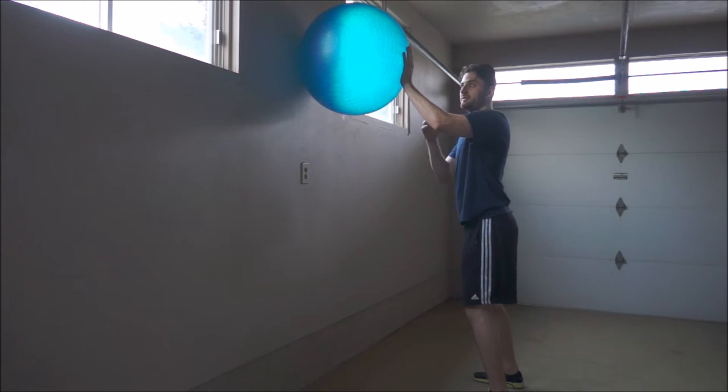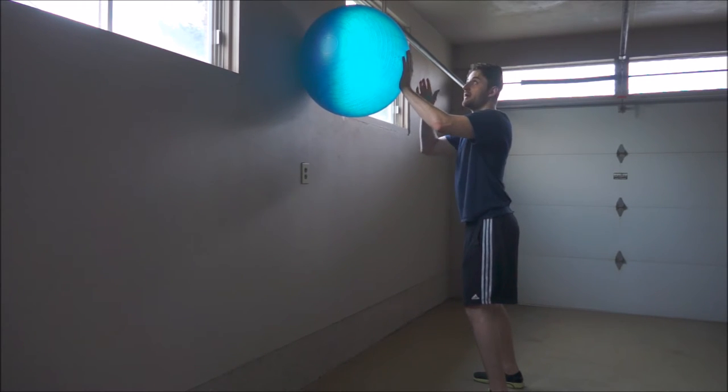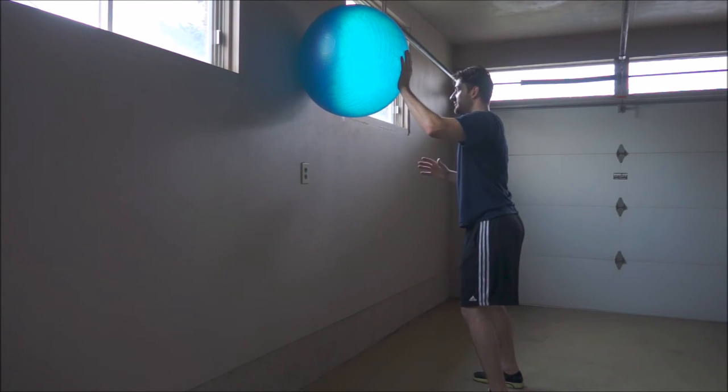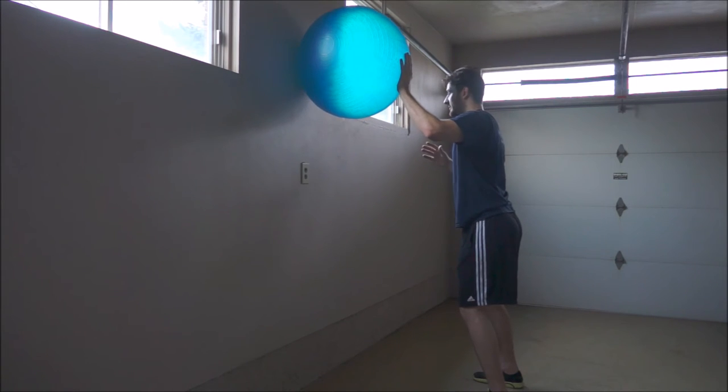We don't want to apply too much pressure because then we won't be able to move the ball upwards - it would become more of an isometric rotary stability exercise. So we'll apply a slight to moderate amount of pressure into the ball, get into a good neutral stance, and push the ball upwards.